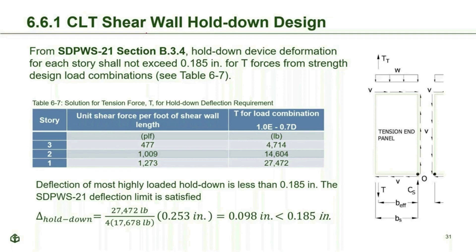A conventional hold-down device is used with an LRFD design tension capacity of 17,678 lbs and associated slip deflection of 0.253 inches. Four hold-downs are used at each end of the first and second story walls; two are used at the third story walls. It is also required to limit device deformation to not exceed 0.185 inches for T forces from strength design load combinations. Using ASCE 7 counteracting load combination with design unit shear forces, T forces are: Story 3 — 4,714 lbs; Story 2 — 14,604 lbs; Story 1 — 27,472 lbs. For the most highly stressed hold-downs at Story 1, the calculated hold-down deformation is 0.098 inches, well below the 0.185-inch limit.